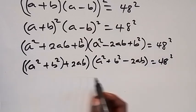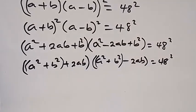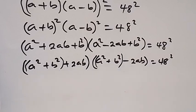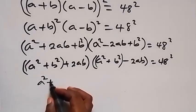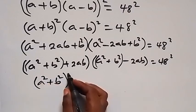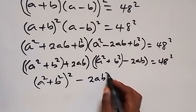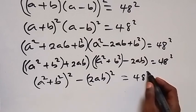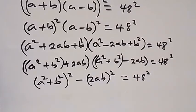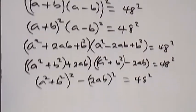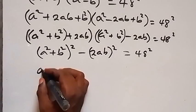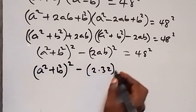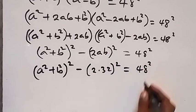Grouping (a squared plus b squared) together, we can see this is again a difference of two squares: (a squared plus b squared) squared minus (2ab) squared equals 48 squared. Since ab equals 32, we substitute to get (a squared plus b squared) squared minus 2 times 32, squared, equals 48 squared.